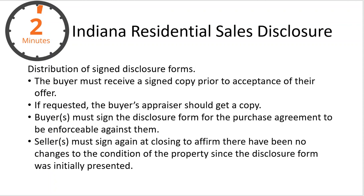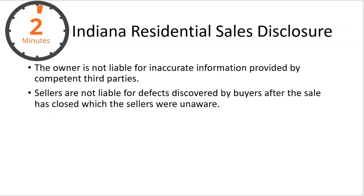The buyer has to receive a copy prior to the acceptance of their offer, so the buyer has to have it and see it before he makes the offer. The appraiser also is going to get a copy of this as well. The buyer will sign the disclosure when the offer is made, and then the seller will sign it again at the closing table to show that nothing has changed from the original sales disclosure.